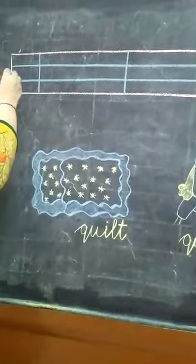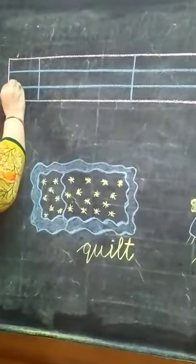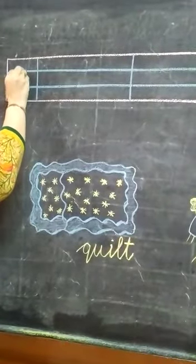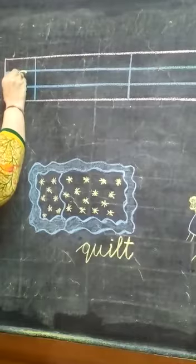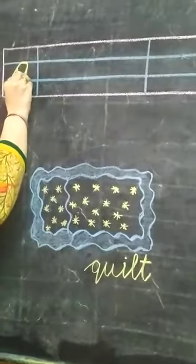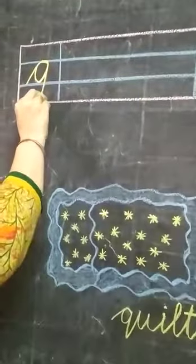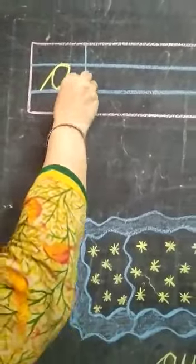In the first box, write down alphabet Q. Q will come in the lower three lines like this.